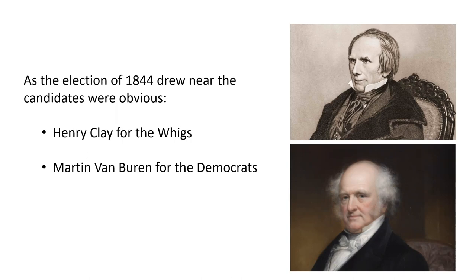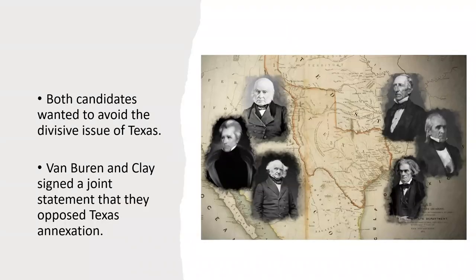As the election drew near, there were two obvious candidates. One was Martin Van Buren, who had been president, had failed to be reelected, and now wanted to make a second bid for the White House. The other was the invariable Whig candidate, Henry Clay, who was Mr. Whig but never got to the White House. They decided to avoid the divisive issue of Texas, and met in Raleigh, North Carolina, signing a joint statement saying they opposed the annexation of Texas — a policy Andrew Jackson had opposed and Van Buren had followed in the 1830s.